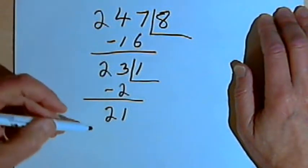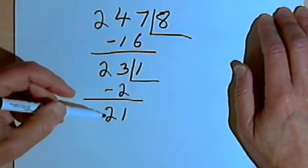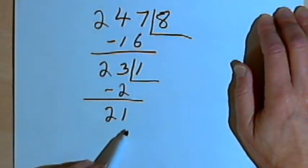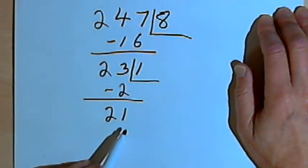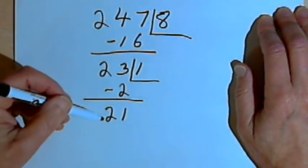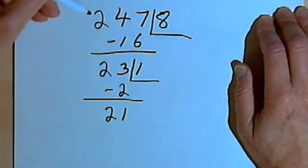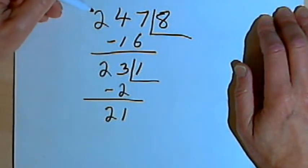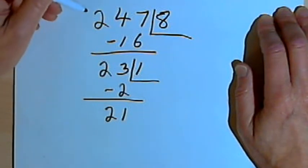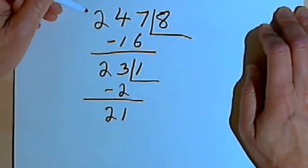Now, to do this, you do have to know all the two-digit numbers that are divisible by 7. But once you've got those math facts, then you can look at any larger number, no matter how big, and decide whether you can divide that by 7.